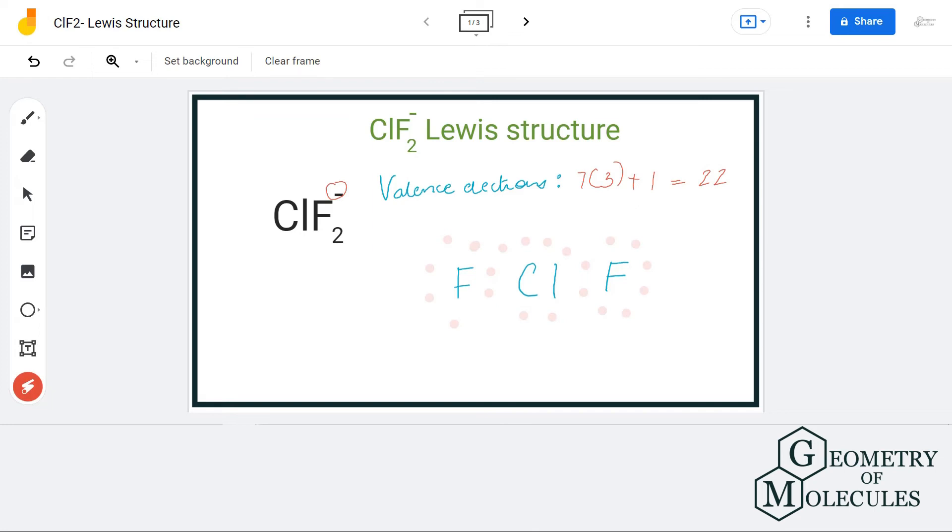Now if we calculate the formal charges, you will come across a charge of minus one on this chlorine atom, and that is fine because we have a minus charge overall. So this is the Lewis structure of ClF2-.